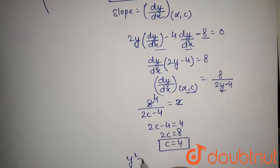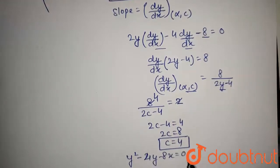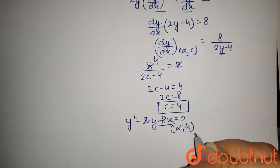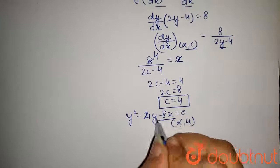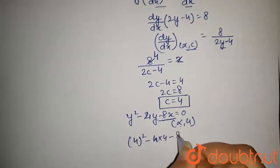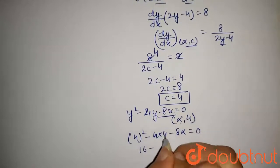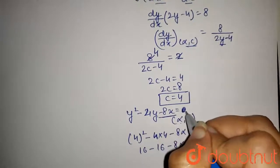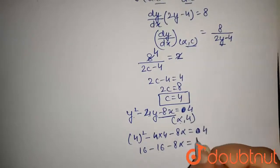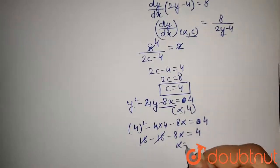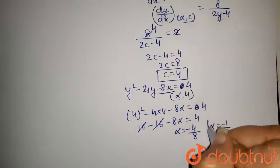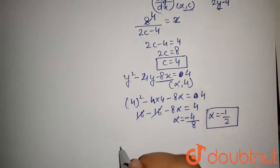We have the curve y² - 4y - 8x = 4. Now alpha comma c, with c = 4, means the point (alpha, 4) will satisfy this equation. On substituting, we get 4² - 4(4) - 8(alpha) = 4, which gives 16 - 16 - 8(alpha) = 4. So -8(alpha) = 4, giving alpha = -4/8 = -1/2. So the value of alpha is -1/2.